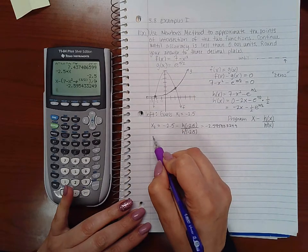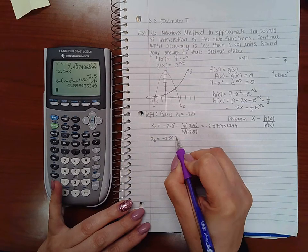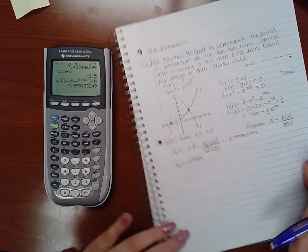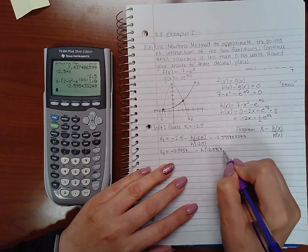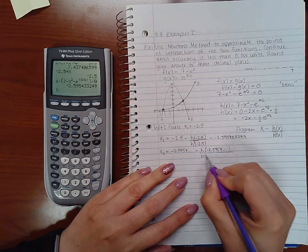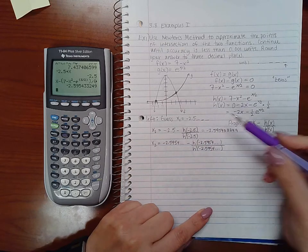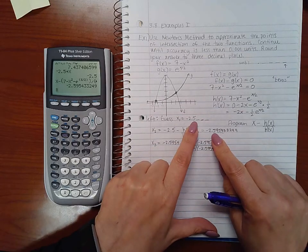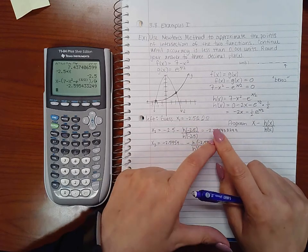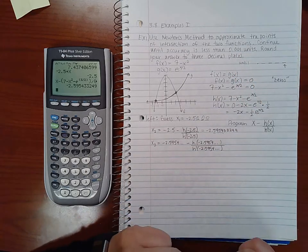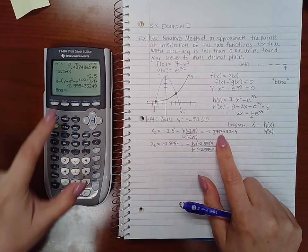So then that is going to be my third guess, x3. So it's going to be this number minus h of that number over h prime of that number. Now if you notice, these two things are not the same, the fourth digit. They're the same on the first digit, but this is 0, 0, 0. They're not even the same within the second digit after the decimal. So I could not stop here because that distance is not less than 0.001 accuracy. So let's go ahead and leave that number in there exactly as it is, and just hit store, so it stores that answer as x, and hit enter.